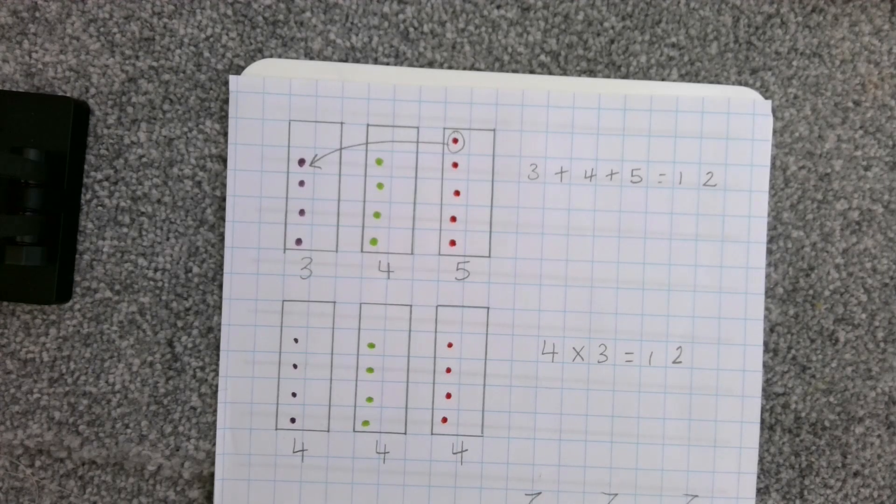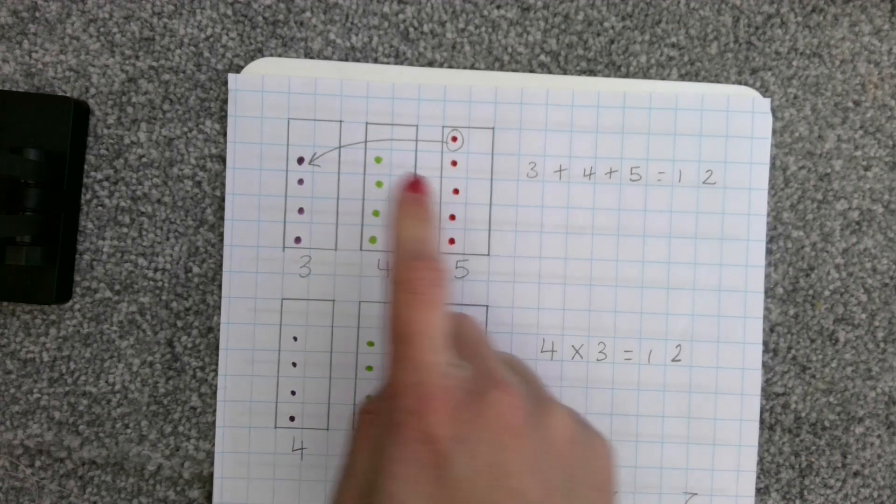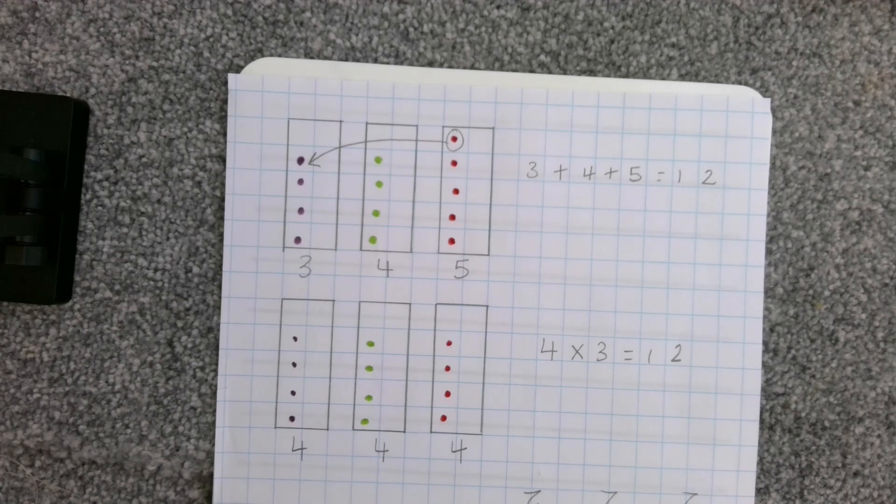What I want you to do now is have a go at creating your own consecutive numbers and seeing is it always one from this box that goes over to the first box to make them all have the same amount. I did one, two, three, and then I did three, four, five. You can choose any three consecutive numbers to try what I've just done with.